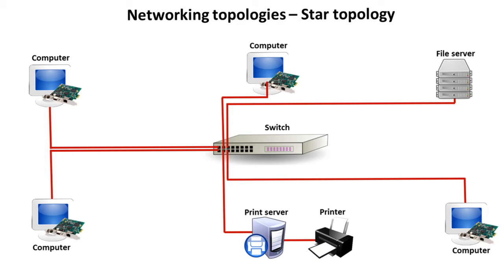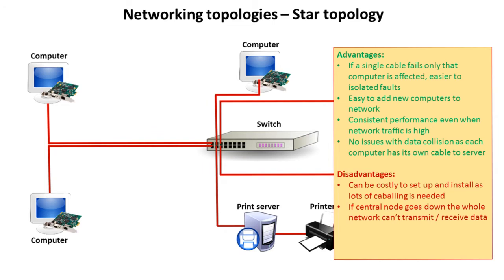Here we see a physical star topology. It's called a star because, in a loosely abstract way, we have some kind of central device and then our other devices all coming off it in spokes, a bit like a star. There are some quite big advantages here. If a single cable fails — for example, if this cable here broke — then only that computer is affected, so it becomes quite easy to isolate faults.